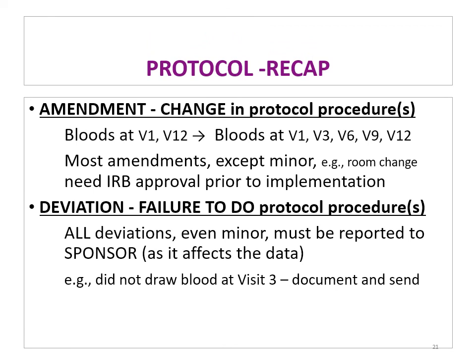It is important to differentiate between two terms: amendment and deviation. An amendment is a change in protocol procedure — for example, if you initially planned to withdraw blood at visit one and visit twelve, and then change it to every three months. Most amendments, except minor ones, require IRB approval prior to implementation. Once you make a change, you must submit the new protocol version to the IRB and wait for approval — even if it takes a month. You cannot perform the new procedure on any patient during the IRB review period.